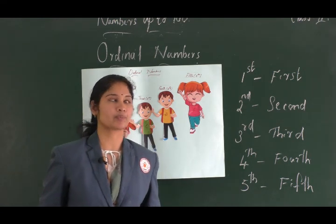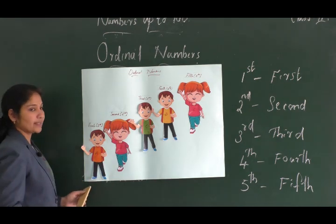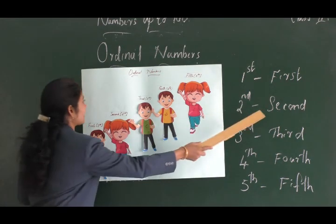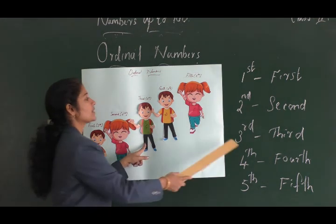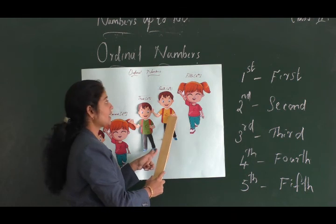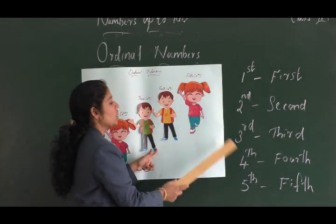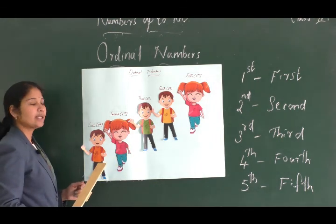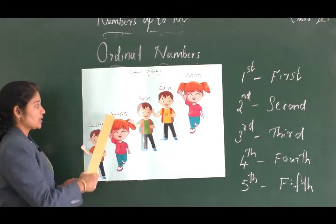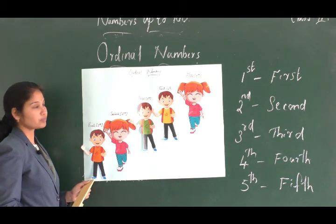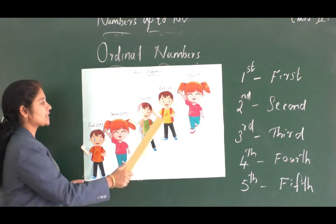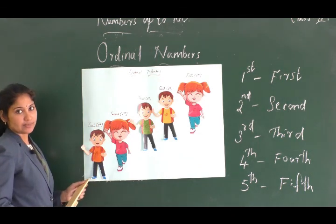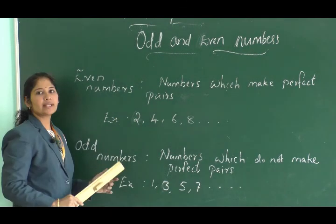In this chart there are five kids standing. Child A is standing at the first position, child B at the second position, child C at the third position, child D at the fourth position, and child E at the fifth position. The names A, B, C, D, E show the position of each kid. Hope you understood ordinal numbers.